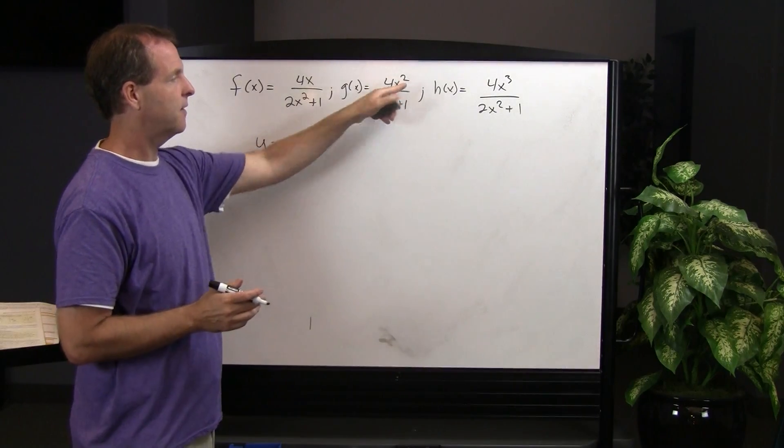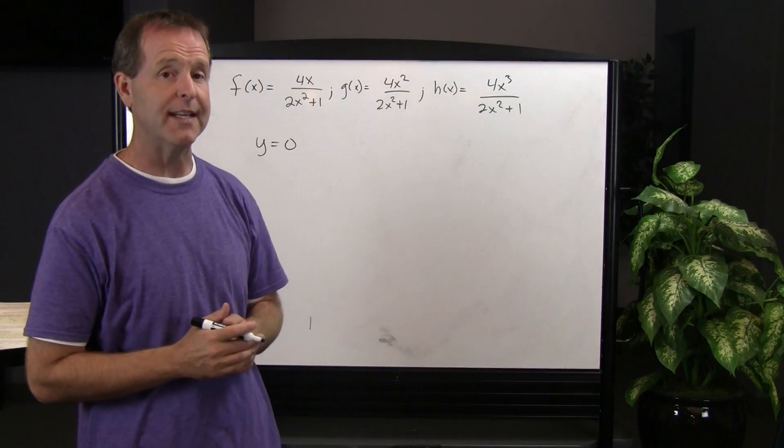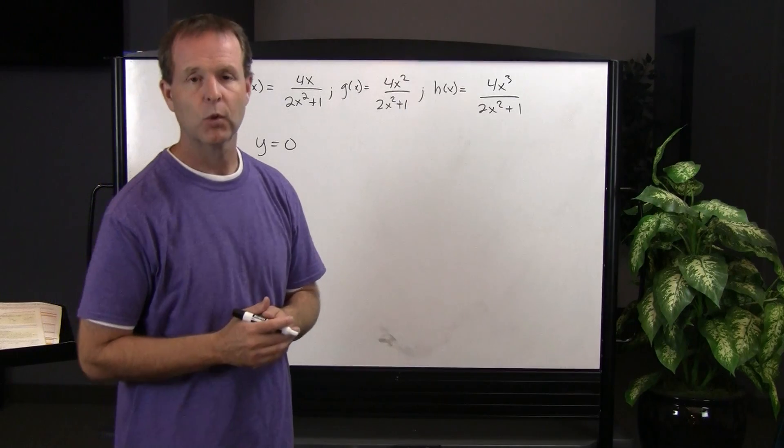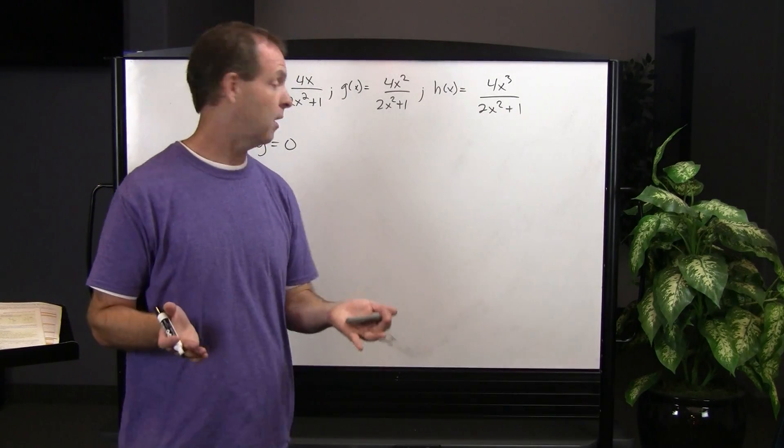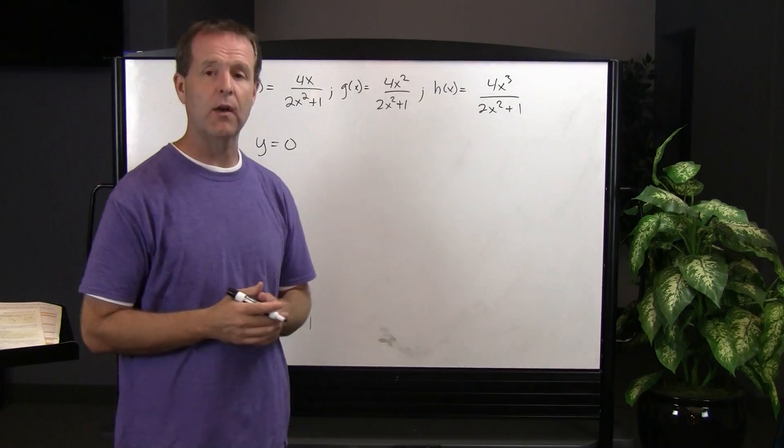In our second example, the degree of the numerator and the degree of the denominator are equal. We again have a horizontal asymptote,